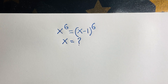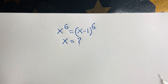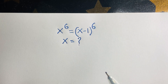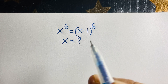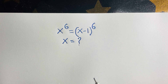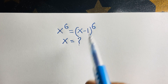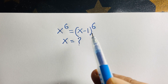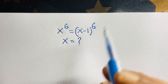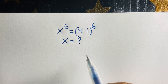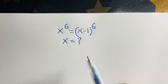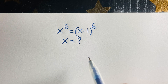Hello everyone. In this video we have solved this exponential equation — how to solve this math olympiad question. This question is x to the power 6 is equal to x minus 1 whole to the power 6, and we have found out what is the value of x in this exponential equation.